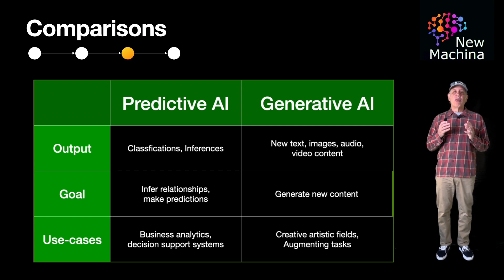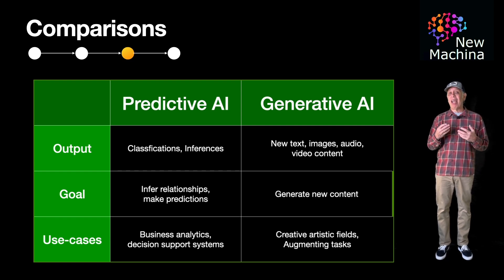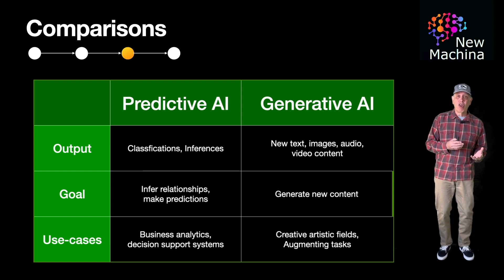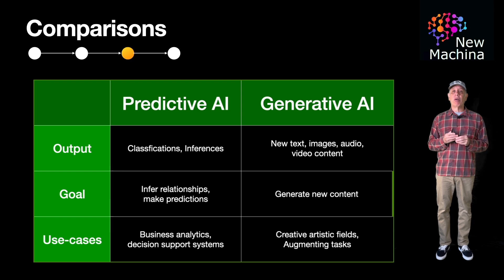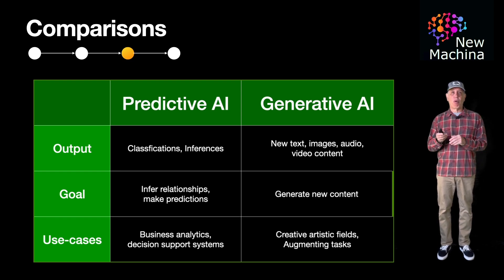So, you should understand at a high level what makes Gen AI different from the original predictive AI. Both forms of AI are really important and will coexist as they solve different types of problems.